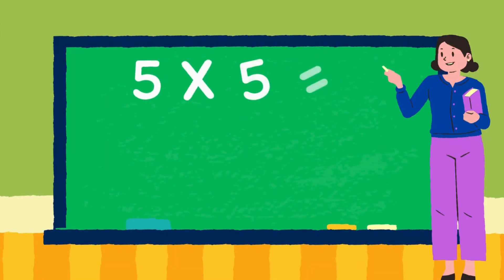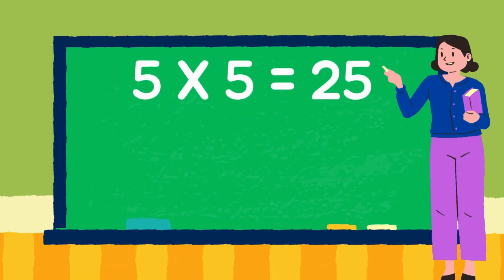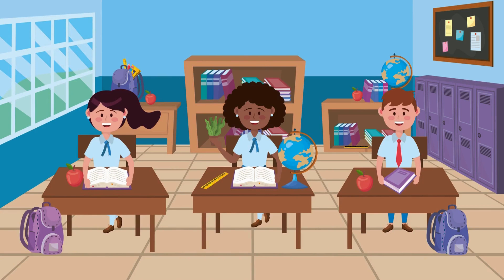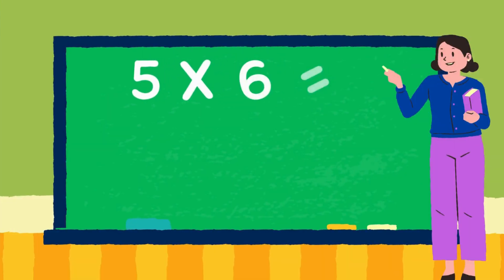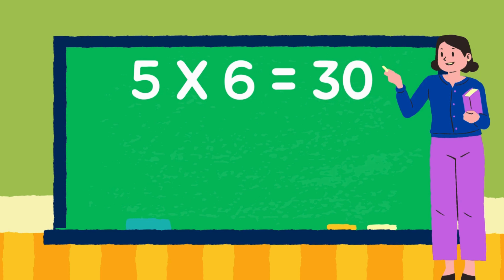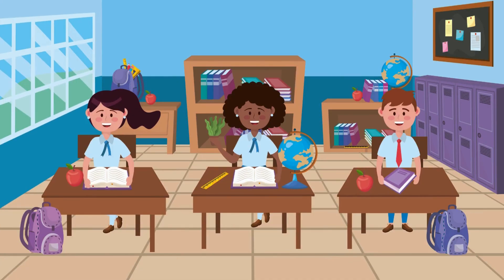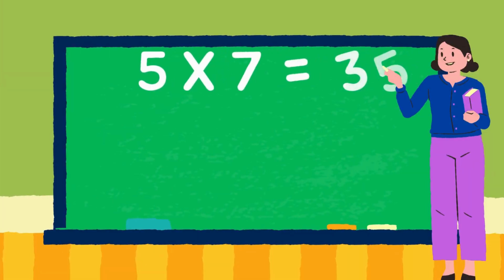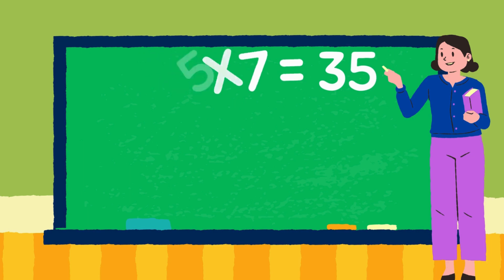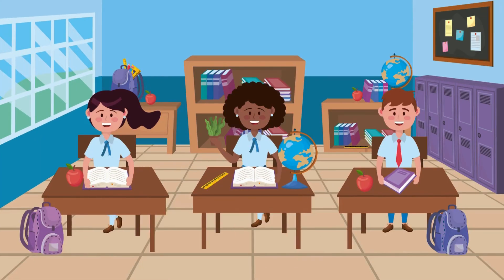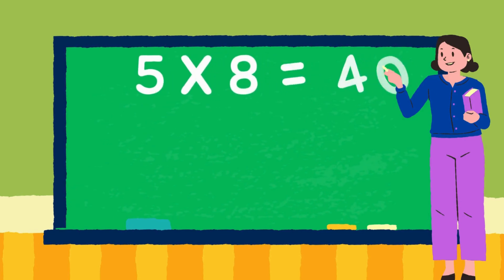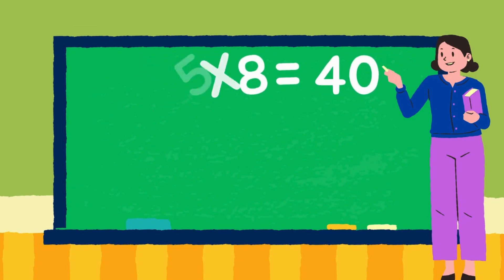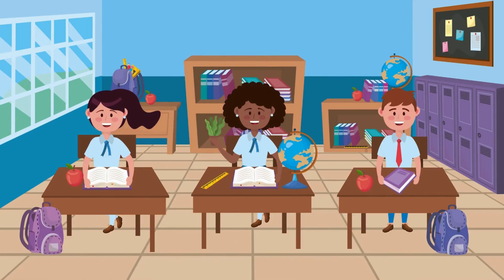5 fives are 25. 5 sixes are 30. 5 sevens are 35. 5 eights are 40.